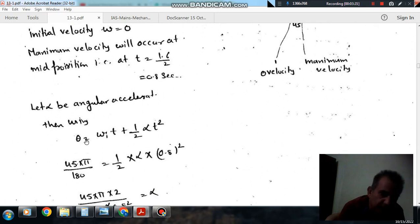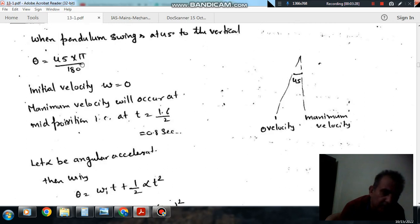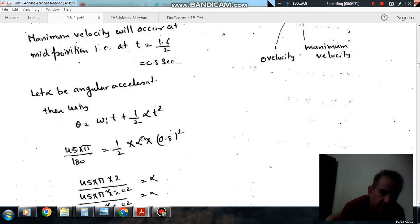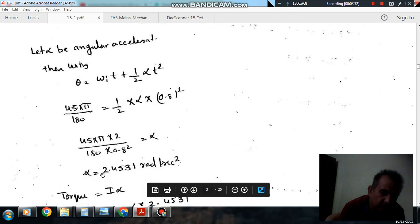Omega is zero. Using theta equals omega t plus half alpha t squared, alpha is angular acceleration and theta is 45 degrees, pi by 4 radians, you can find out angular acceleration. So, the angular acceleration is 2.4531 radians per second squared.